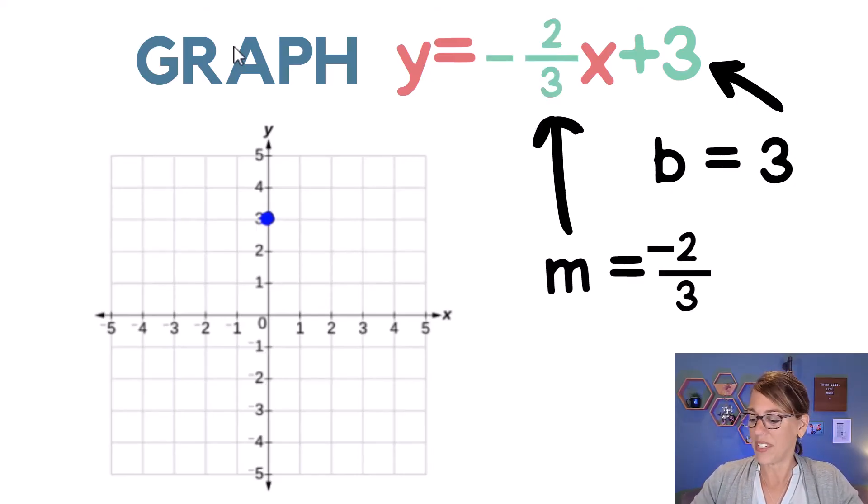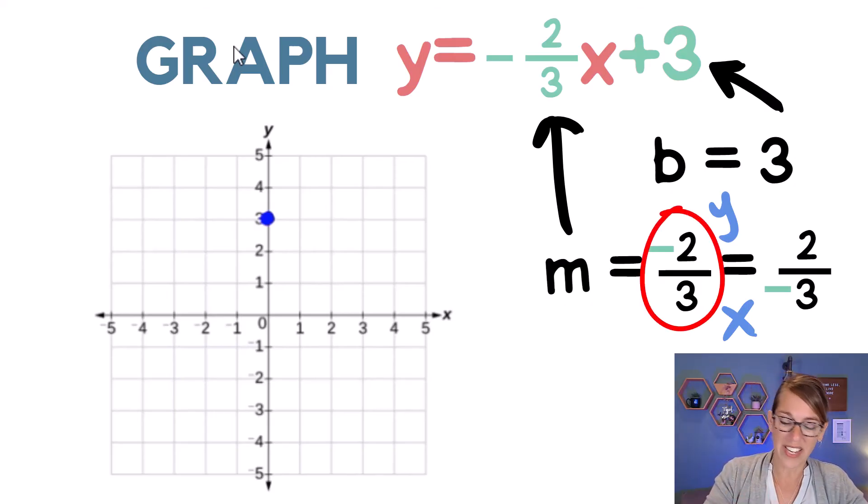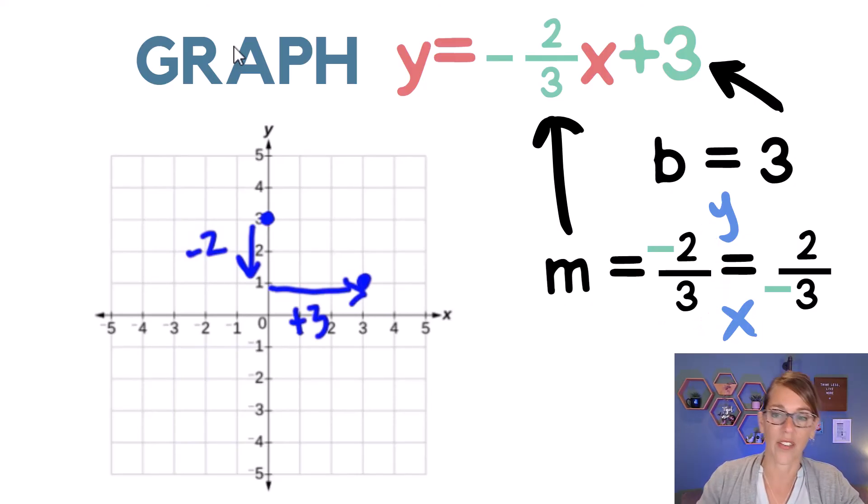My move this time is negative 2 over 3. Now that negative out in front, you can put in either place, either in the numerator, or you can put it in the denominator, but it needs to belong with 1. However you move, you're going to be moving in the y and x direction along the same line. Let's do our first move with a negative 2 over 3. So that's going to be negative 2 in the y direction from my y intercept. So that's a negative 2, and then I'm going to go positive 3. So 1, 2, 3 in the x direction plus 3, and there's another point.